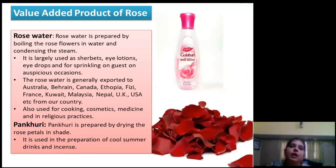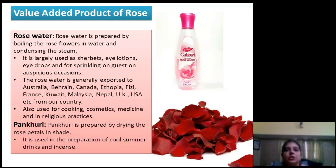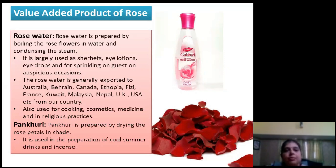Besides cut flower or loose flower, a number of value added products are also prepared from rose. The first one is rose water, which is prepared by condensing steam passed through rose petals. It is used as a sherbet, eye lotion, eye drop, for sprinkling on guests, for cooking, cosmetics, medicine, and religious purposes. Rose water is largely produced in India and exported to countries like Australia, Bahrain, Canada, Ethiopia, Fiji, France, Dubai, Malaysia, and Nepal. Pankhuri is another value added product prepared by drying rose petals in shade, and it is used in the preparation of cool summer drinks and incense.